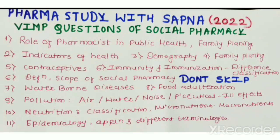We will discuss the role of pharmacist in public health and family planning — prepare this question well. Next is the indicators of health, which is also very important and a repeated question. In demography, prepare the demographic cycle, family planning, and different methods of family planning. For contraceptives, immunity and immunization, prepare their classification and the difference between natural and artificial immunity. Also prepare the definition and scope of social pharmacy.